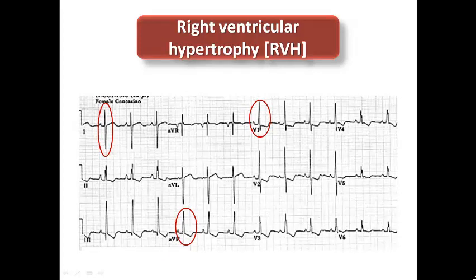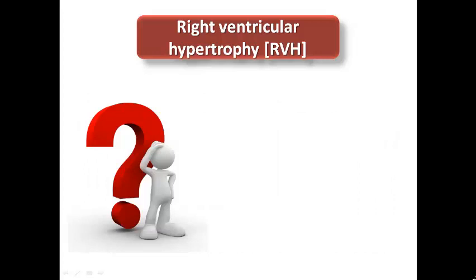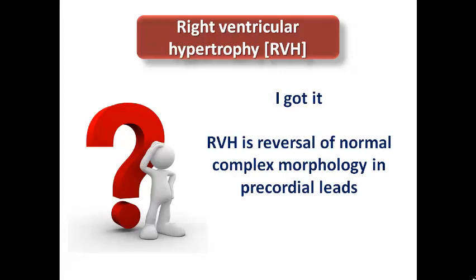In this patient's ECG, we can see right axis deviation represented by the predominantly positive QRS complex in lead aVF and predominantly negative complex in lead I, and a tall R-wave in V1 exceeding 7 mm. While LVH is an exaggeration of the normal complex morphology, RVH is simply a reversal of the normal QRS complex morphology in precordial leads.